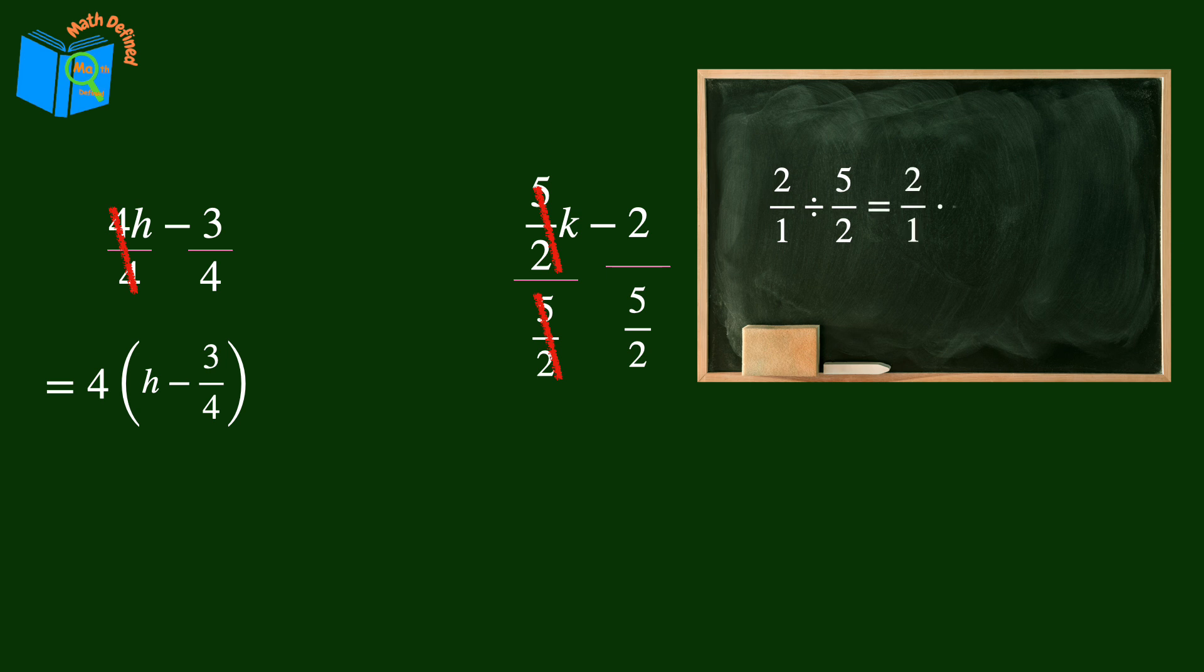We need to multiply by the reciprocal, and then multiplying the numerators, 2 times 2 is 4, and then the denominators, 1 times 5 is 5. So we are left with k minus four-fifths. Again, we'll bring down the coefficient, 5 over 2, and that is all there is to it.